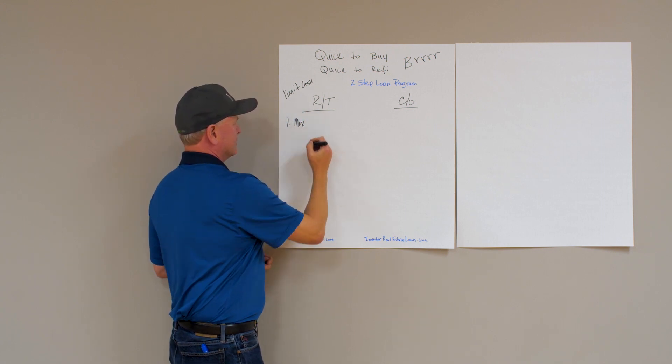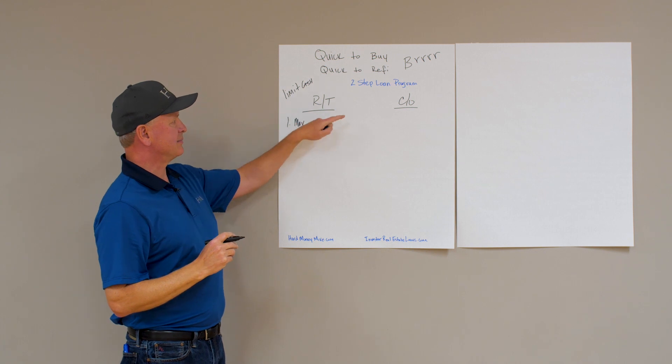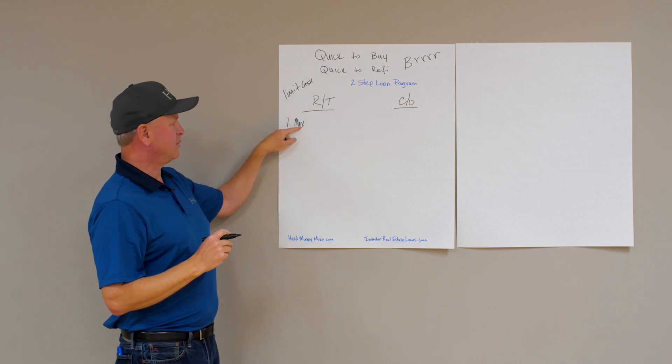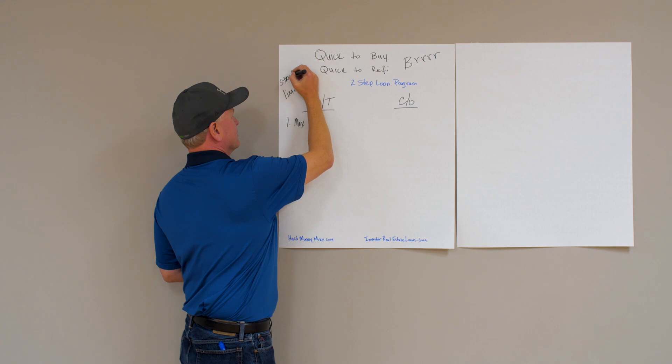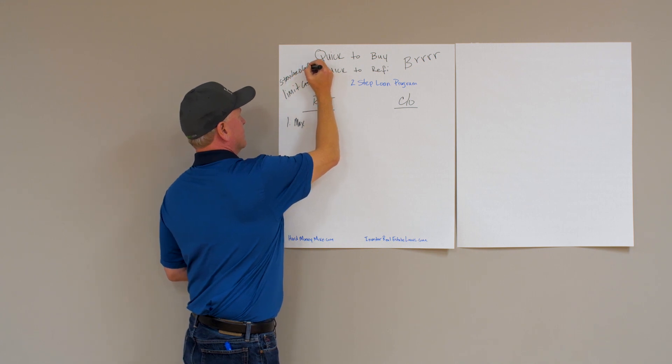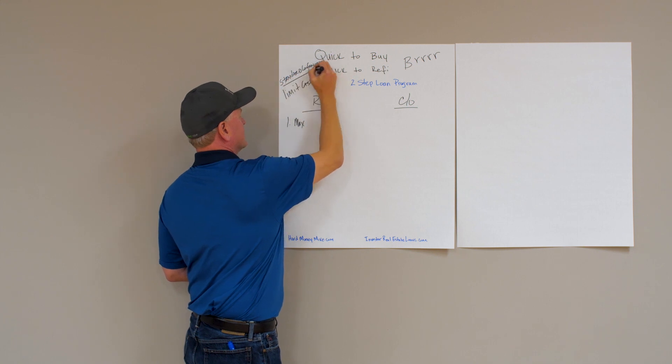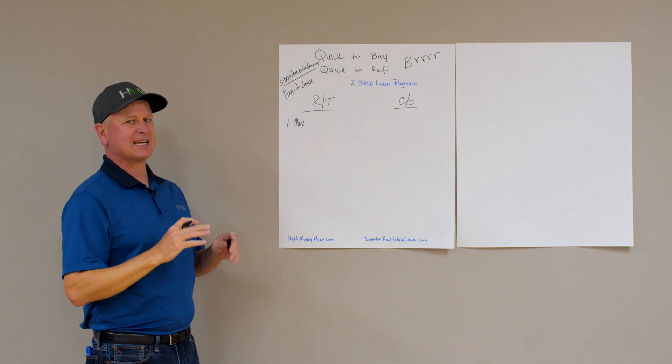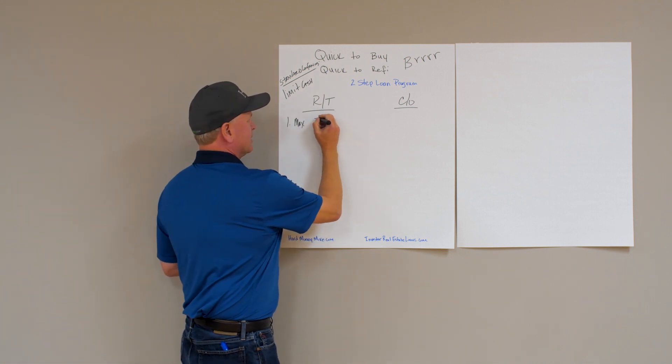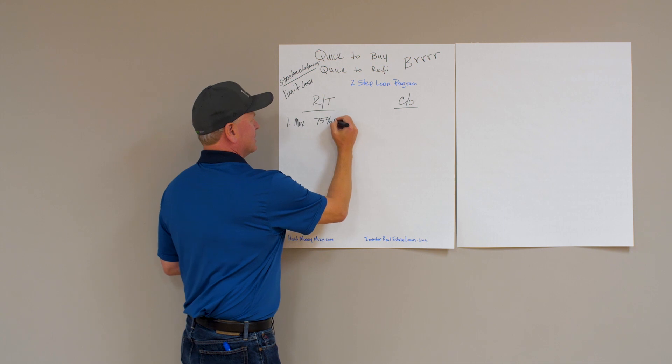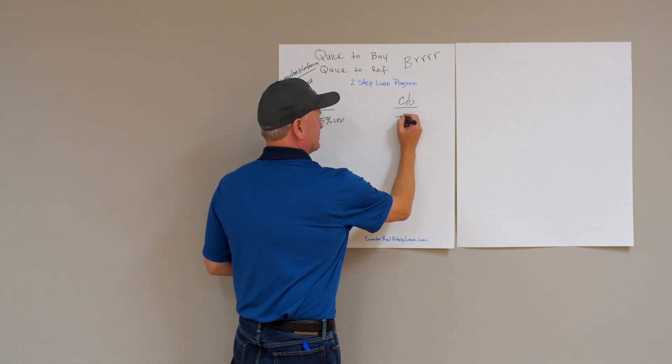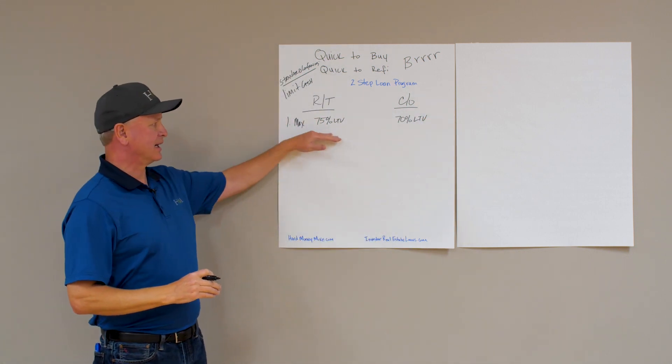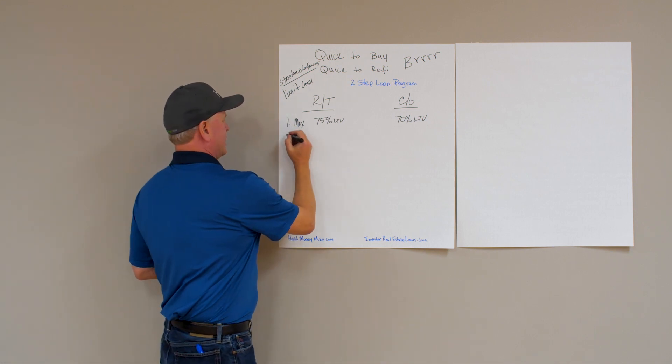Number one is maximize. If we're looking to use this two-step loan program and limit your cash, number one we want to maximize the loan. On a rate and term, on a standard conforming loan, you're going to be able to get a loan to value of 75%. If you're looking at a cash out, you're going to be limited to 70%. So right now we're not going to be able to maximize our loan by using cash out.